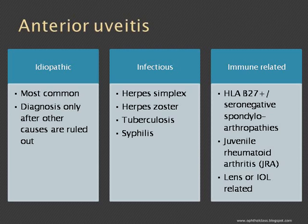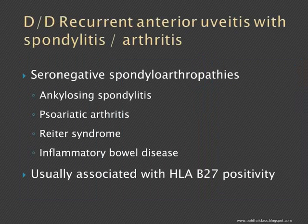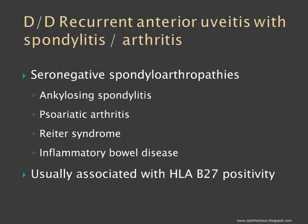Not juvenile rheumatoid arthritis because the patient is not young enough. Recurrent anterior uveitis with spondylitis and arthritis — the differential diagnosis is HLA-B27 positive seronegative spondyloarthritis, which includes ankylosing spondylitis, psoriatic arthritis, Reiter's syndrome, and inflammatory bowel disease.